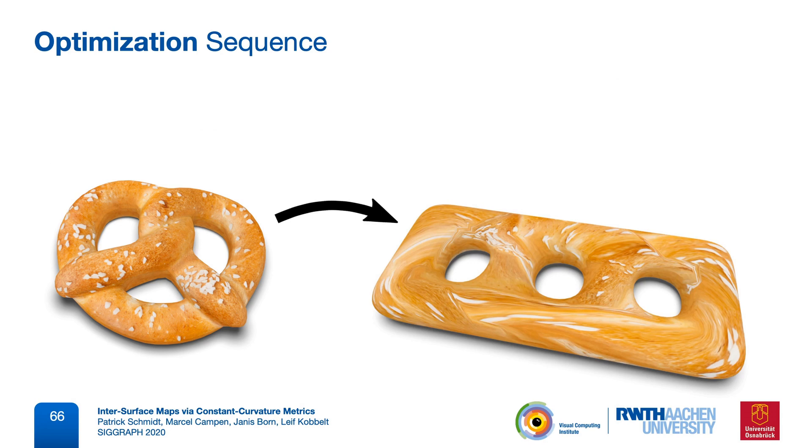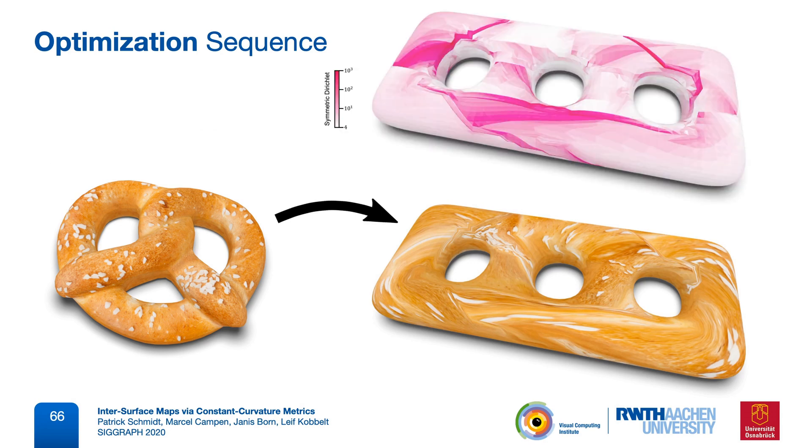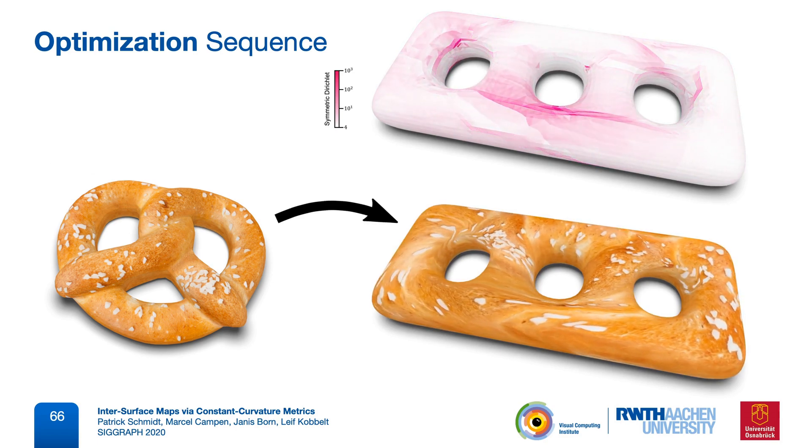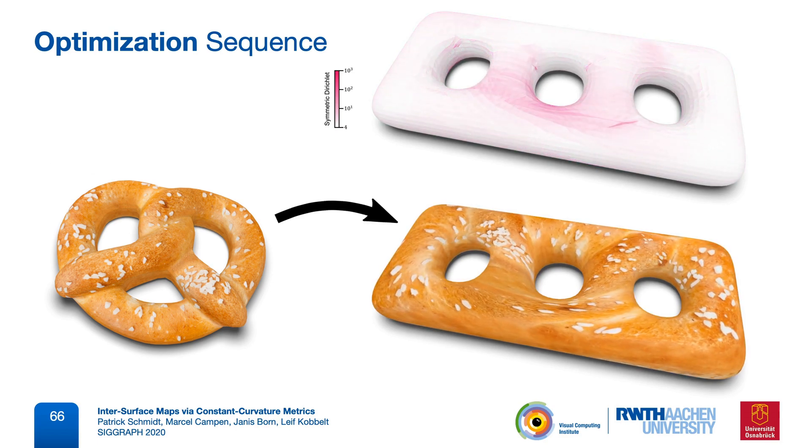This is a very distorted initial map, and we show the symmetric Dirichlet energy as a heatmap. Here is a time-lapse of the optimization sequence, where we see how the algorithm manages to remove as much distortion as possible.